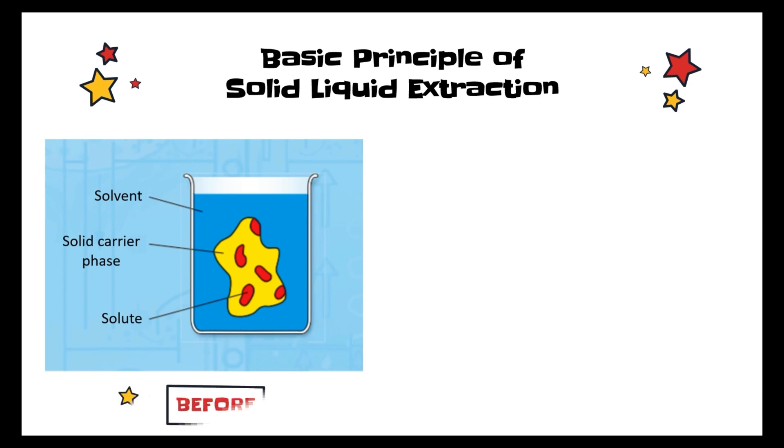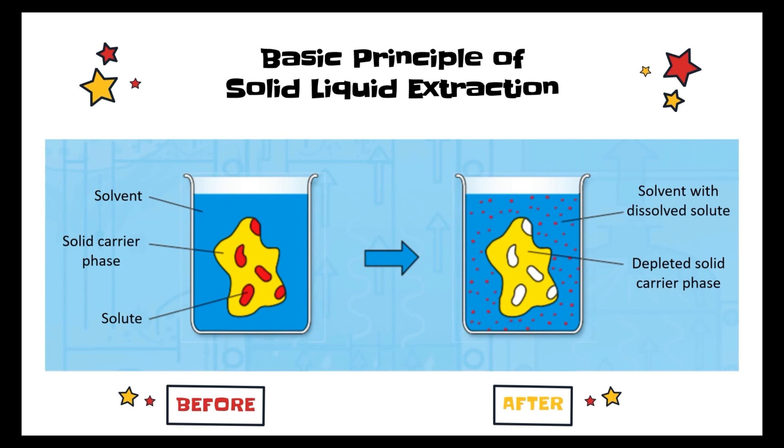When leaching occurs, the solute will be extracted out and dissolve in the solvent, resulting in a depleted solid carrier phase. So basically, this is how the solid-liquid extraction works.